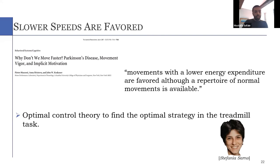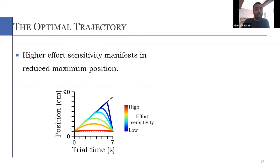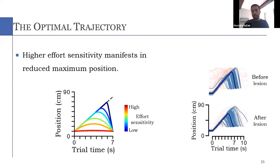So Stefania was a computational neuroscientist in the lab. We use optimal control theory to find the optimal strategy in our task. I don't have time to go through the modeling part. But basically, she found that increasing the effort sensitivity in the model or the sensitivity to energy expenditure causes the animals to start running earlier. So the red trajectories in this plot. So they wait less and have a reduced maximum position. And this was something that we have noticed in our data.